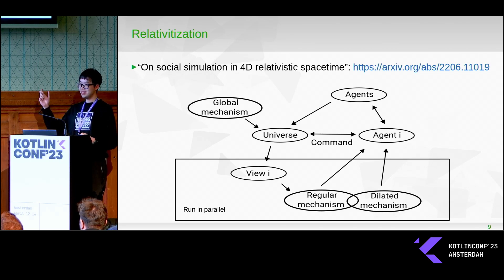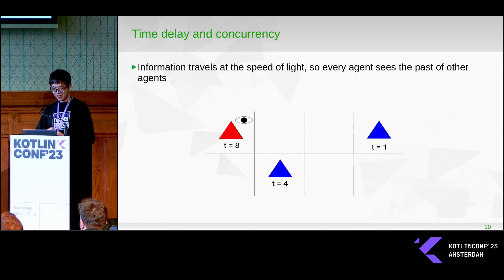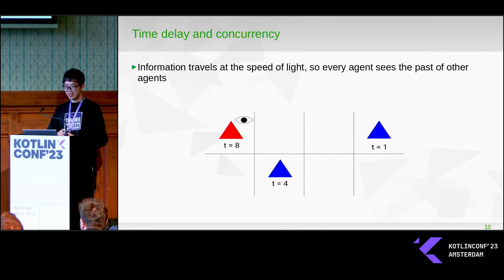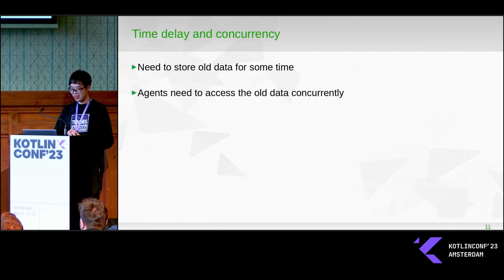For example, I would like to run some parts of the simulation in parallel. This is not trivial because of the physics — you have a time delay. If you have this red rectangle, you are seeing parts of other blue rectangles from the past. So you have to consider these things, which means you need to store old data for some time, and that is quite expensive.